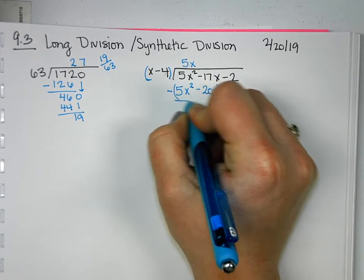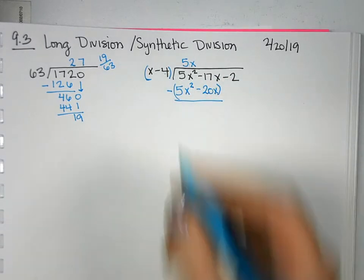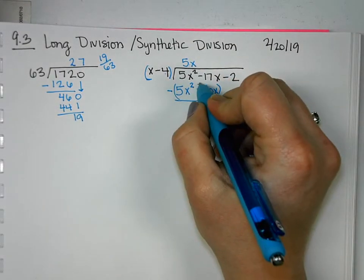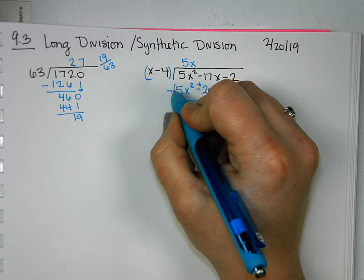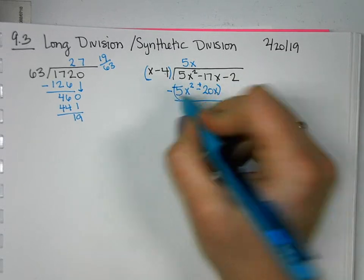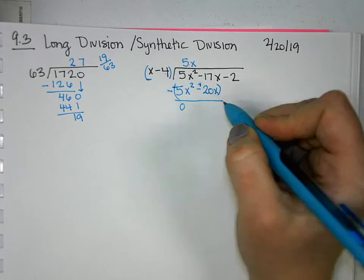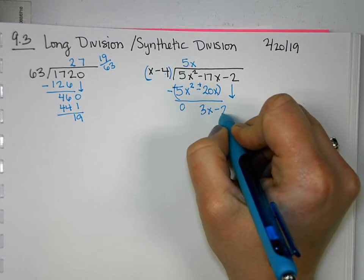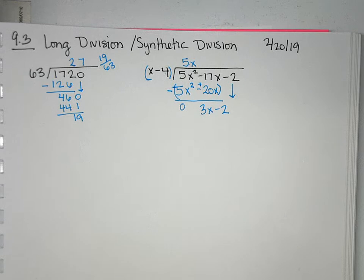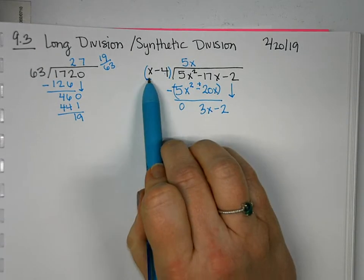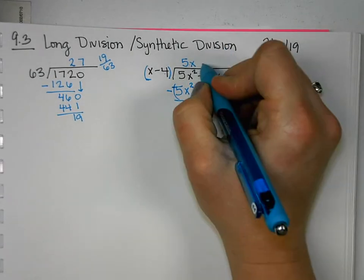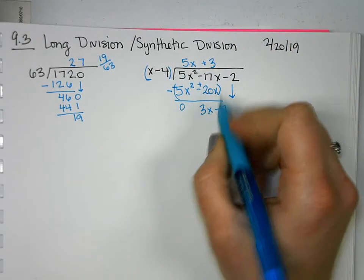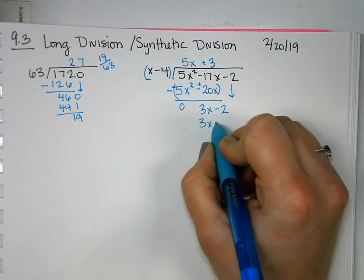But we're subtracting, and we have to distribute that negative. So when we distribute the negative, this will become plus, and this will become minus. So these will cancel out, and here we'll get 3x. Bring down the next term. What do you have to multiply x by to get 3x? 3. And then we'll multiply 3 by everything. So 3x minus 12.